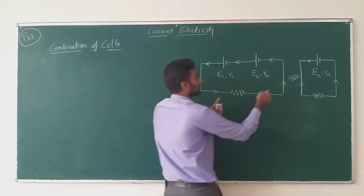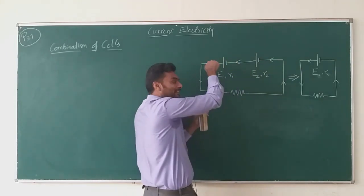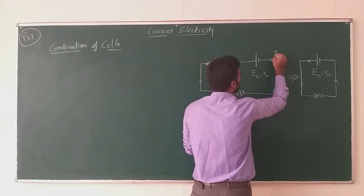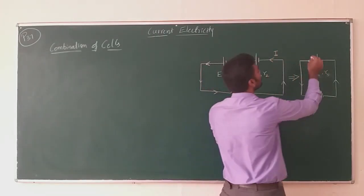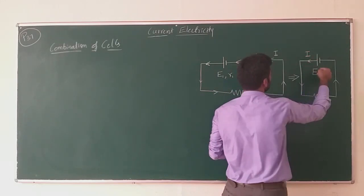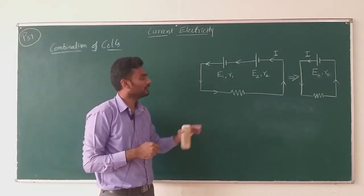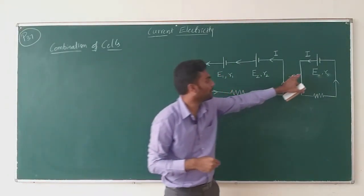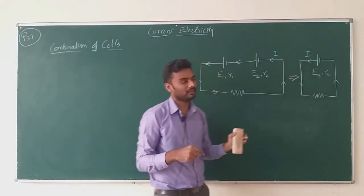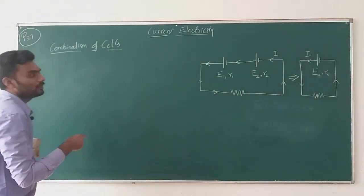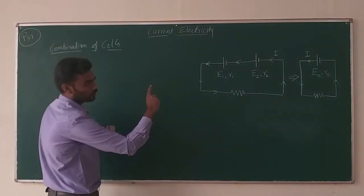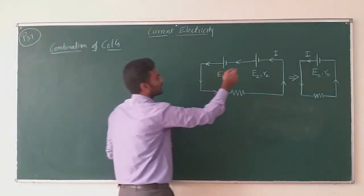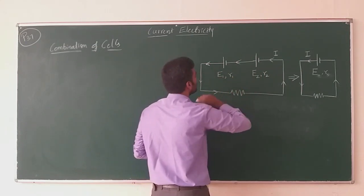The same current I flows through every part of the circuit and the same current flows through the effective cell as well. The term that is constant for both the combination and the effective cell is the current — it is the same current in both circuits.